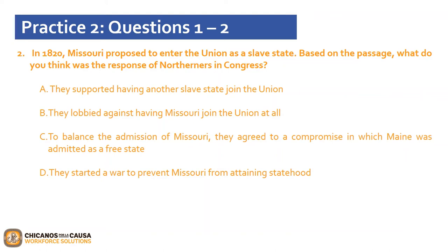Question 2 asks: in 1820, Missouri proposed to enter the Union as a slave state. Based on the passage, what was the response of northerners in Congress? Recall that new territories were inducted in pairs — one free state and one slave state. The correct answer is C: to balance the admission of Missouri, they agreed to a compromise in which Maine was admitted as a free state.